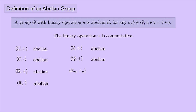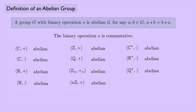How about Z_N under addition mod n? Abelian. And nZ under addition? Also abelian. The set of non-zero complex numbers under multiplication? Abelian. The set of non-zero real numbers under multiplication? Abelian. And the set of non-zero rational numbers under multiplication? Abelian.